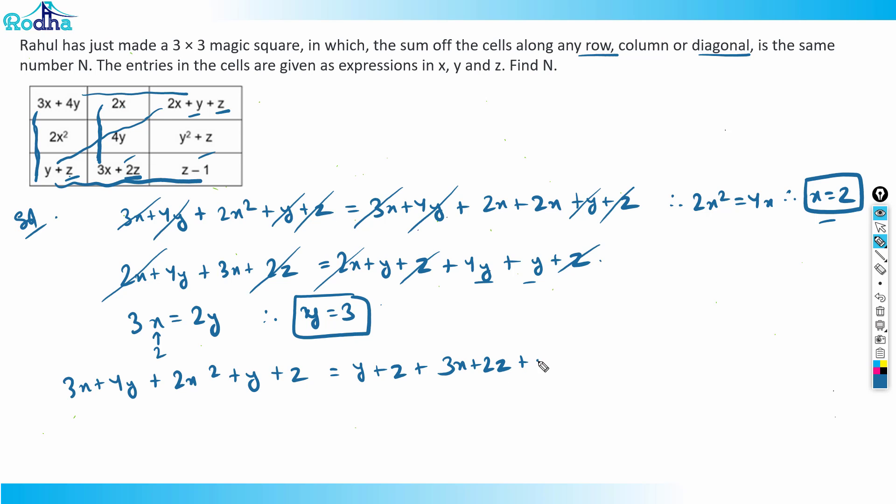So y + z + 3x + 2z + z - 1. So what I'm getting here now, 4y + 2x² equal to 3z - 1. And now I'll be getting z will be equal. So I will be putting x equal to 2 here, y as 3. Therefore z will be equal to 7. So z will be equal to 7.